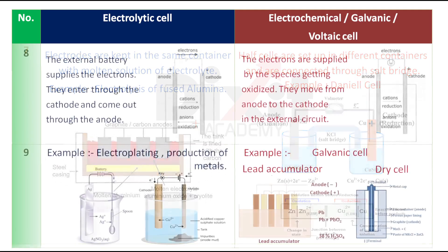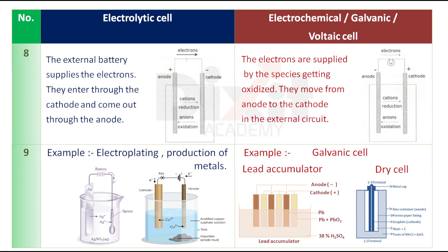Point number eight: In an electrolytic cell, the external battery supplies the electrons. They enter through the cathode and come out through the anode. In an electrochemical cell, electrons are supplied by the species getting oxidized. They move from the anode to the cathode in the external circuit.